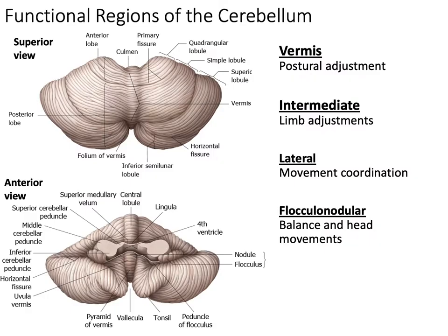Now we're going to move on to the functional regions of the cerebellum. These are vertical portions that coordinate with their functions. We're going to start off with the vermis, the central portion of the cerebellum, which is associated with postural adjustment. This makes sense because the core muscles around your vertebral column help you with posture, so it makes sense that the core portion of the cerebellum is also associated with posture.